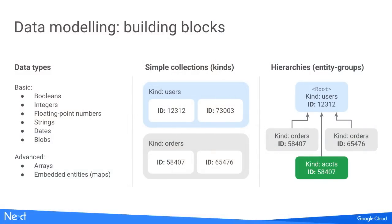Let's talk about how to lay out your data in Cloud Datastore. The basic building blocks: an entity is essentially a document or table row; a kind is like a collection or table but a bit more powerful. Standard data types range from integers to blobs; you can also use arrays or embedded entities, which are essentially maps. You can control data locality using hierarchies called entity groups. Entity groups have implications on consistency and write throughput.